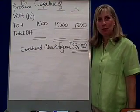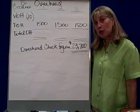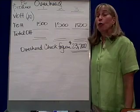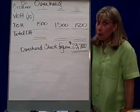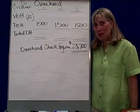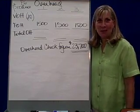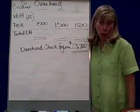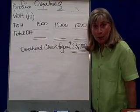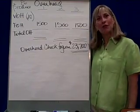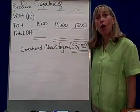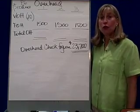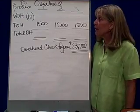Managerial accounting, the budgeting process — we've been doing problem P6. We've done the sales budget, the production budget, the material budget for water, and the direct labor budget. And now it's time to do the overhead budget. If you look at problem P6, they break down your variable overhead into its various components.